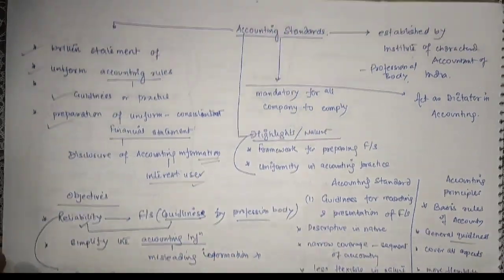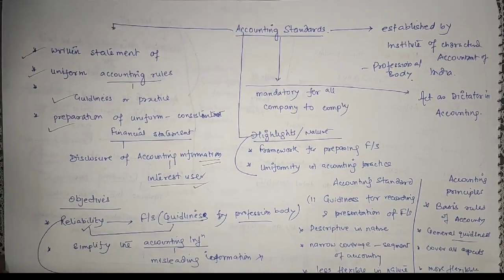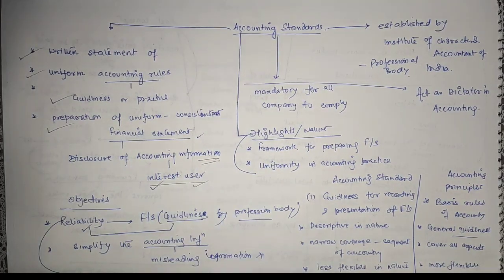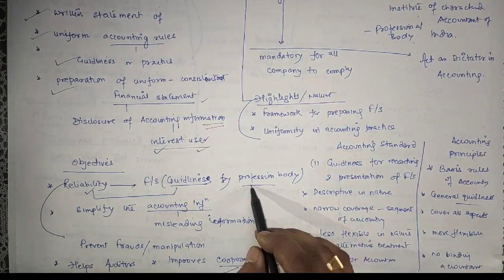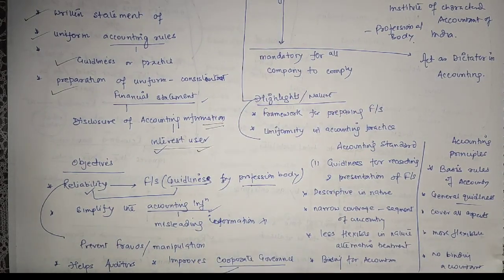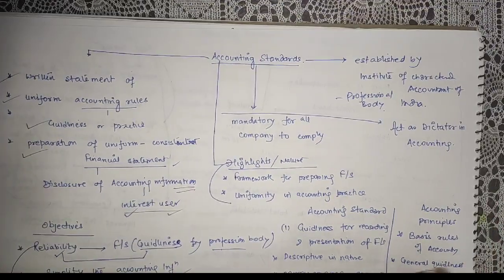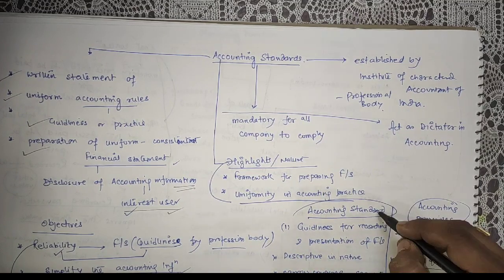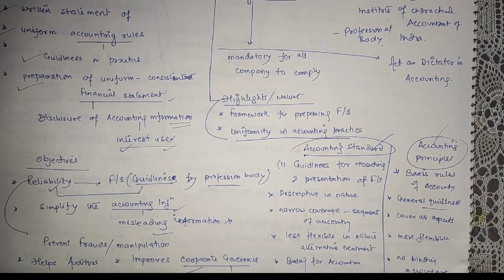So today we discussed accounting standards — they are written statements of uniform accounting policies, guidelines, and practices for the preparation of consistent financial statements used by accounting users. The objectives include: providing reliability through professional body guidelines, simplifying accounting information, deleting misleading information, preventing errors, frauds and manipulation, helping the auditor, and improving corporate governance. Accounting standards are uniform in nature. We also covered a few differences between accounting standards and accounting principles. Hope you liked the video — tomorrow I will be back with another one, thank you for watching.